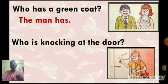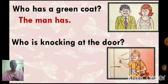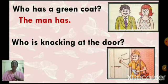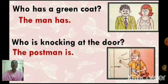Next one: who is knocking at the door? The postman is knocking at the door. How are you going to answer? In the question, who is is used. So when you are answering, you are going to answer: the postman is. The answer also will come in is. The postman is.